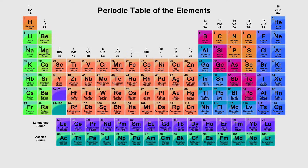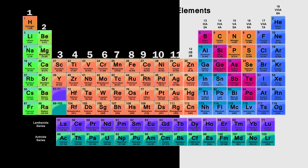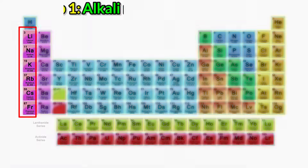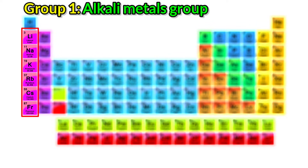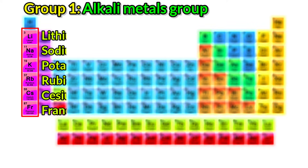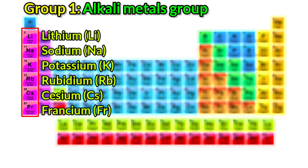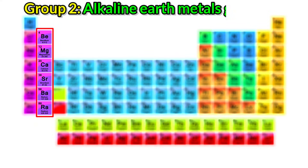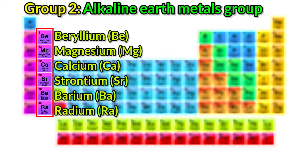Now let's see groups 1 to 18 individually along with their group names. Group 1: Alkali metals group. The elements included in the alkali metals group are lithium, sodium, potassium, rubidium, cesium, and francium. Group 2: Alkaline earth metals group. The elements included are beryllium, magnesium, calcium, strontium, barium, and radium.